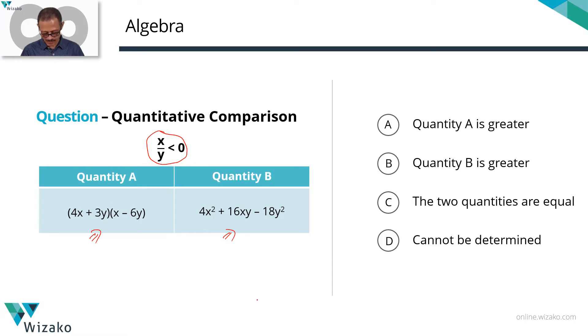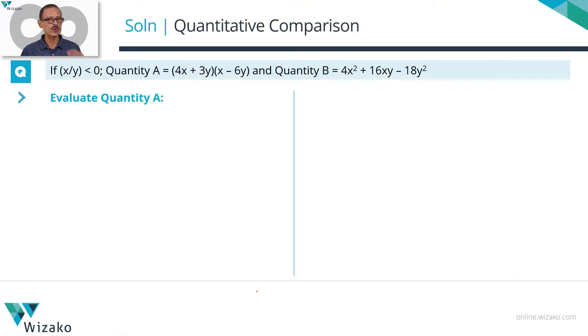Let's start by evaluating quantity A. Let's expand quantity A. Quantity A is given as (4x + 3y)(x - 6y). We're going to multiply and expand this.